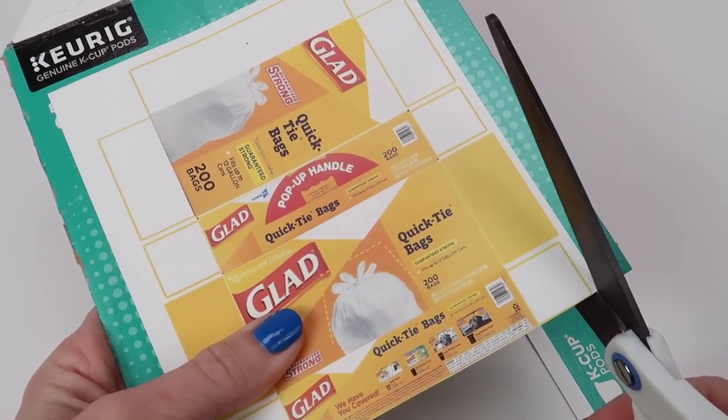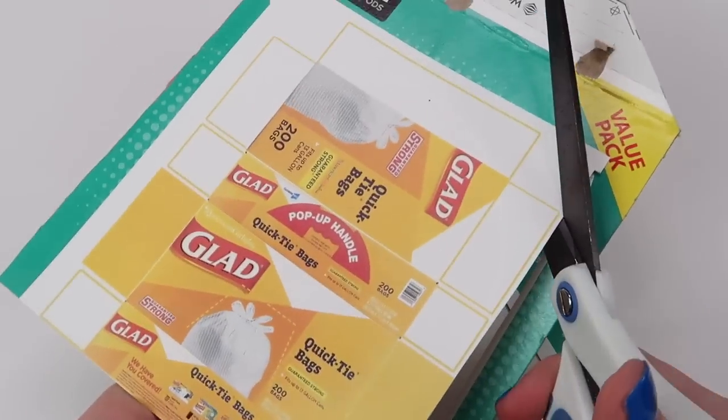Once it's glued on, then you can cut out the printable around all the lines provided.